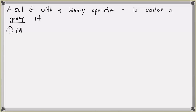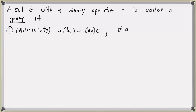One, the operation is associative. That is, A times the quantity BC equals the quantity AB times C for any elements A, B, and C in the set G.